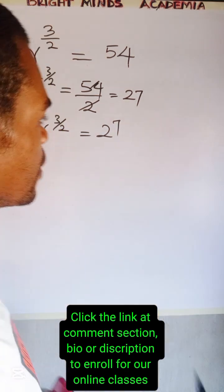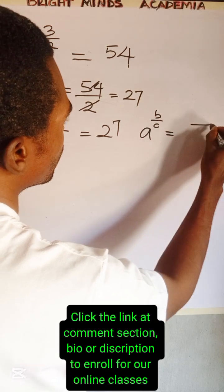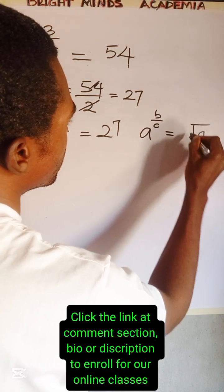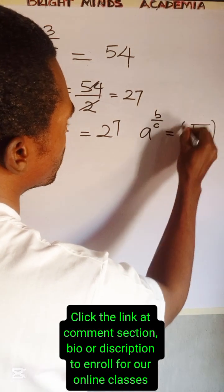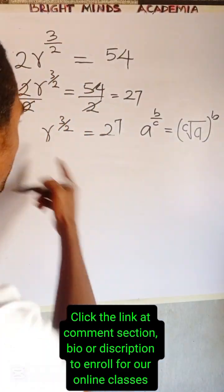Now there is a law in indices that says a to the power of b all over c is equal to the c root of a all to the power of b. The next thing to do is to express these in this form.